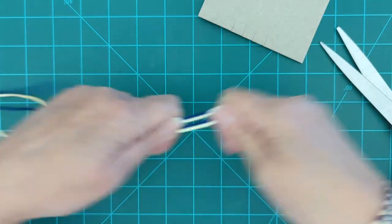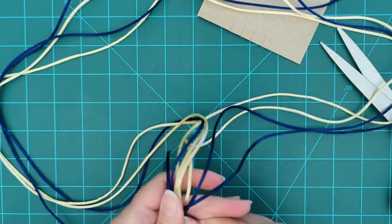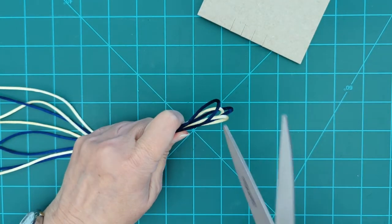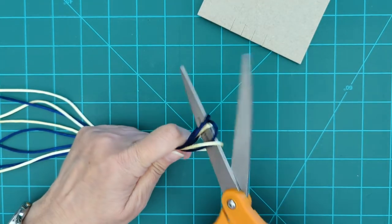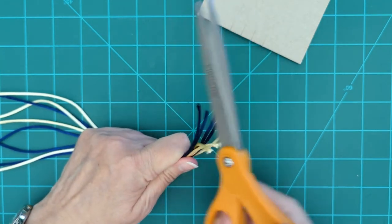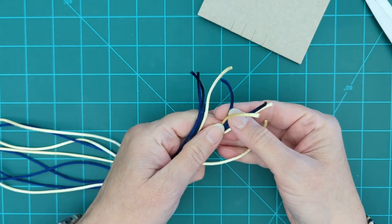So I just folded them and cut them in half. Then I'm going to do the same thing. I'm going to fold and cut in half again. And I'll end up with eight cords, four of each color.